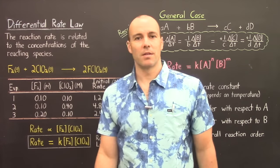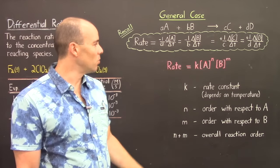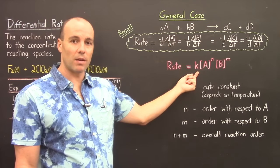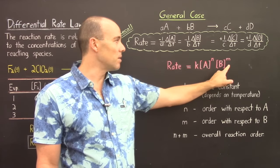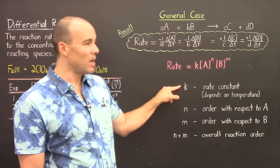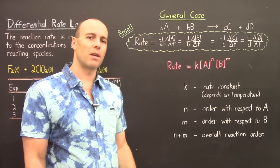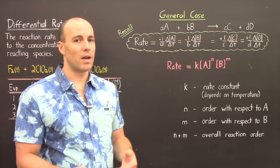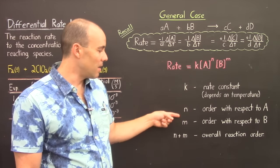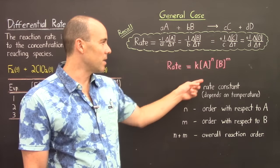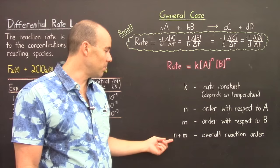Now let's look at the general case. For our generic reaction A plus B forming products C and D, the rate law is: rate equals a rate constant times the concentration of A raised to the n power times the concentration of B raised to the m power. The rate constant is temperature dependent — at higher temperatures, the rate constant is larger. The exponents N and M are called the orders: N is the order with respect to A, M is the order with respect to B, and N plus M is the overall reaction order.